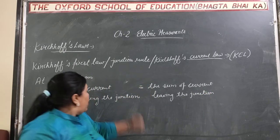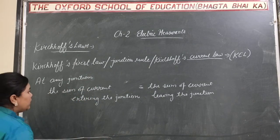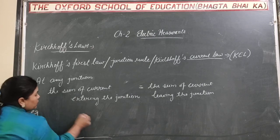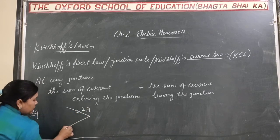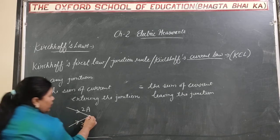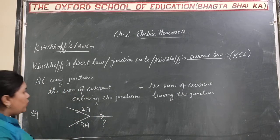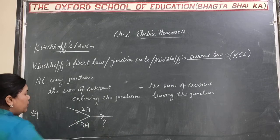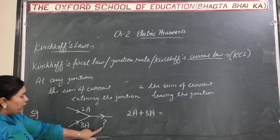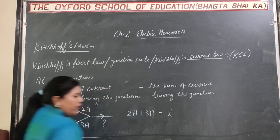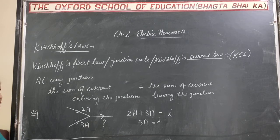What does it mean? It means however much current is entering the junction, that same amount of current is leaving the junction. For example, suppose at a given point, a current of 2 Ampere is entering and from another side, a current of 3 Ampere is also entering the junction. We have to find how much current is leaving the junction. Putting the values: 2 Ampere plus 3 Ampere equals I, so the current leaving the junction will be 5 Ampere.